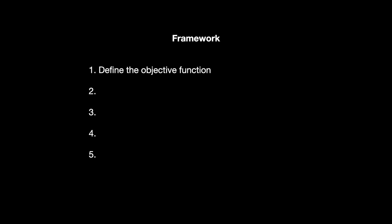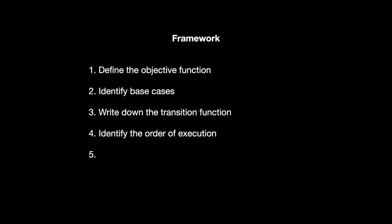The framework consists of five steps. In the first step we define the objective function — the function that you want to minimize or maximize. The second step is identifying base cases, which are basically the boundaries for your algorithm. In the third step we write down a recurrence relation, or transition function, which takes the system from one state to another.